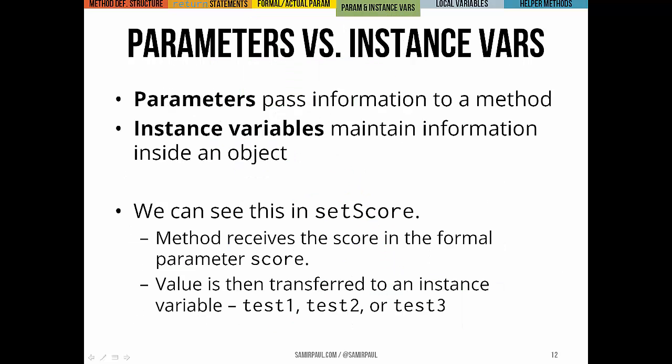So this begs just a very brief discussion of a really important distinction that we need to draw, and that's the distinction between parameters and instance variables. Parameters have the job of passing information to a particular method from whoever's calling it. On the other hand, instance variables are supposed to maintain information of an object. They're sort of like an object's memory. They're the things it remembers.